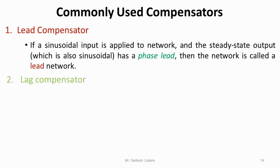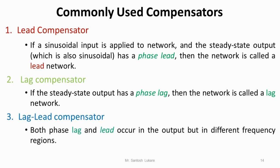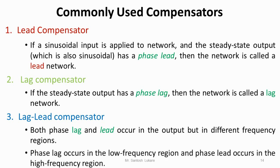In the case of a lag compensator, again if a sinusoidal input is applied, in steady state the output is also sinusoidal, but with a lagging phase difference with respect to the input. Then the network is called a lag network. The lag-lead compensator is a kind of combined lag as well as phase lead compensator, which occurs in different frequency regions: the phase lag occurs in the lower frequency region and the phase lead occurs in the high frequency region.